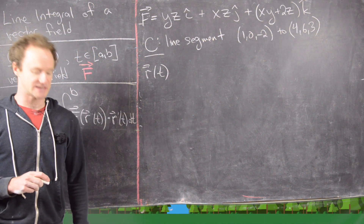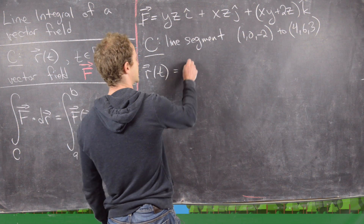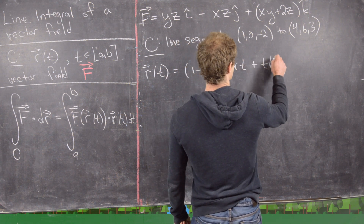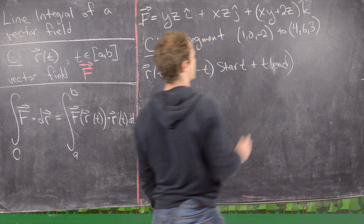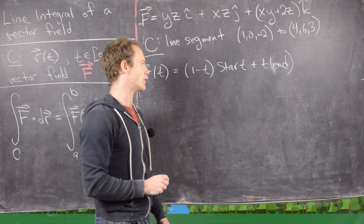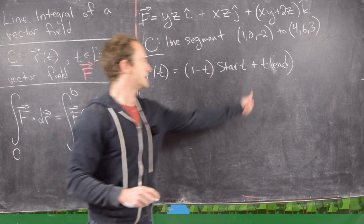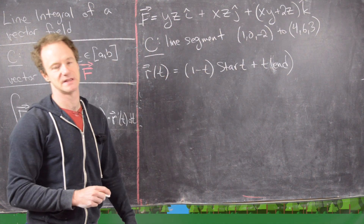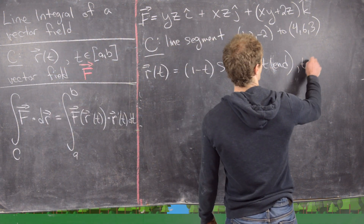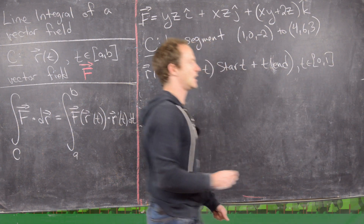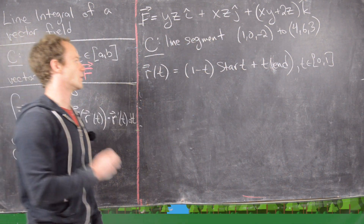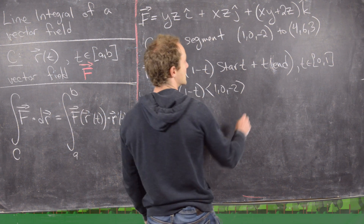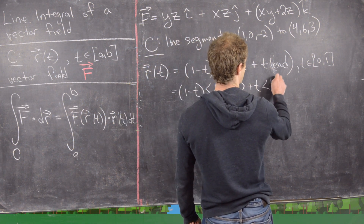Let's parametrize the line segment. All line segments can be parametrized with the same formula: (1 minus t) times the starting point plus t times the ending point, with t running from 0 to 1. At t = 0 we get the starting point; at t = 1 we get the ending point. So this is: (1 - t) times <1, 0, -2> plus t times <4, 6, 3>.